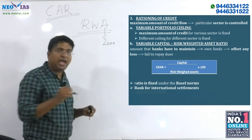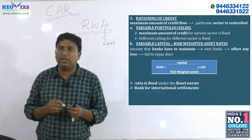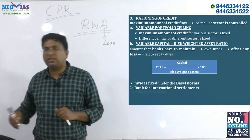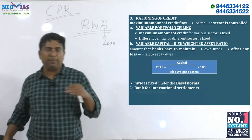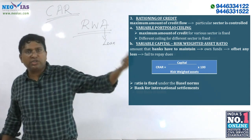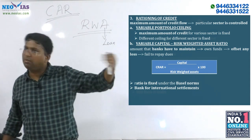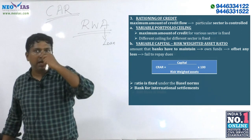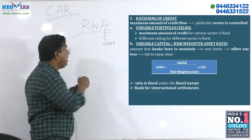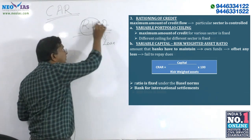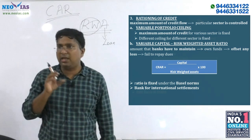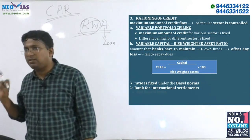Each loan — the bank gives different types of loans: housing loan, agricultural loan, SME or MSME loan, real estate loan, commercial vehicle loan, business loan, and loan to the government as well. So what RBI will do is fix a risk-weight to each sector.